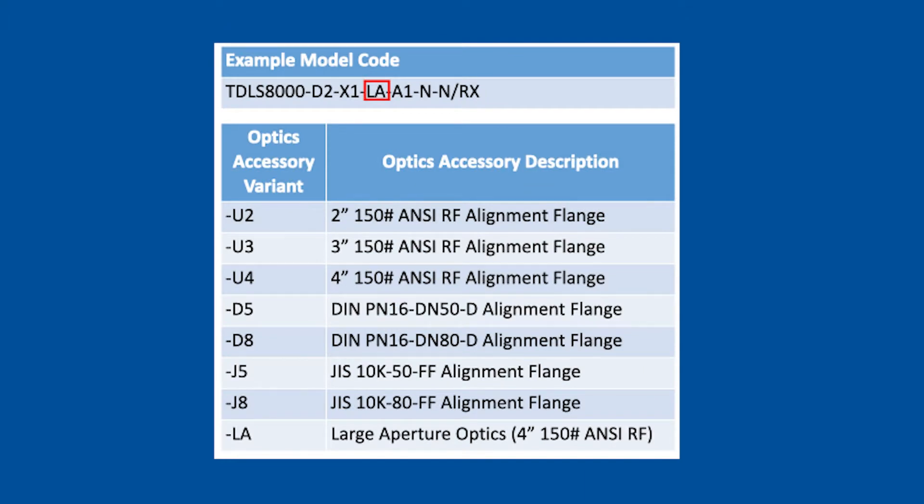Long path installation units denoted by optics accessory suffix variant LA will have a special window in the LAO or large aperture optics assembly at the sensor control unit or SCU side. The window on the laser unit side is a standard alignment flange window. Please see the alignment flange window cleaning and replacement video for more detail on cleaning or replacing the window on that side of the unit.